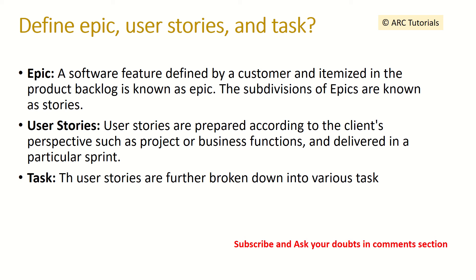Can you tell me the difference between an agile epic, user stories, and tasks? An epic is a software feature defined by a customer and itemized in the product backlog — it is the top-level itemized feature. User stories are the breakdown of features into smaller, achievable tasks. A task is the lowest level — for example, a user story called 'login' can be broken down into tasks like 'user validation.' Multiple tasks make up one user story, and multiple user stories make up an epic.